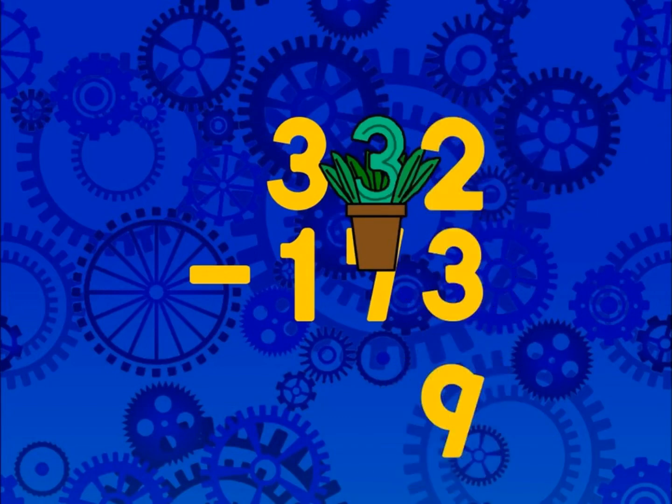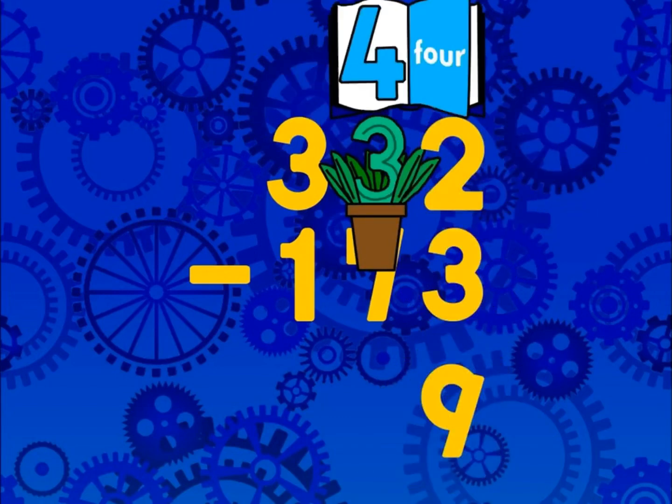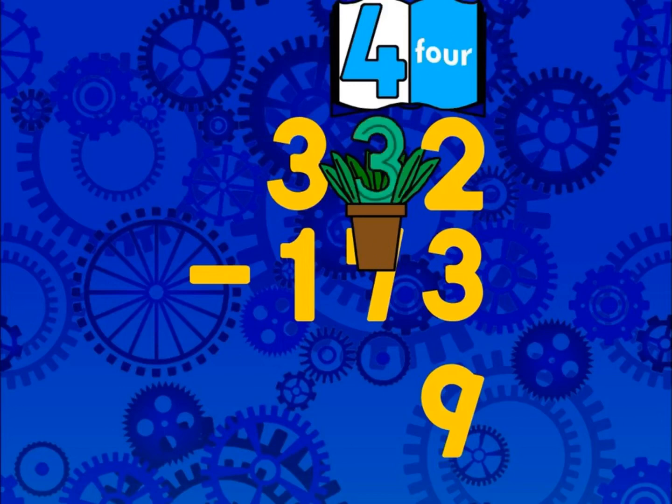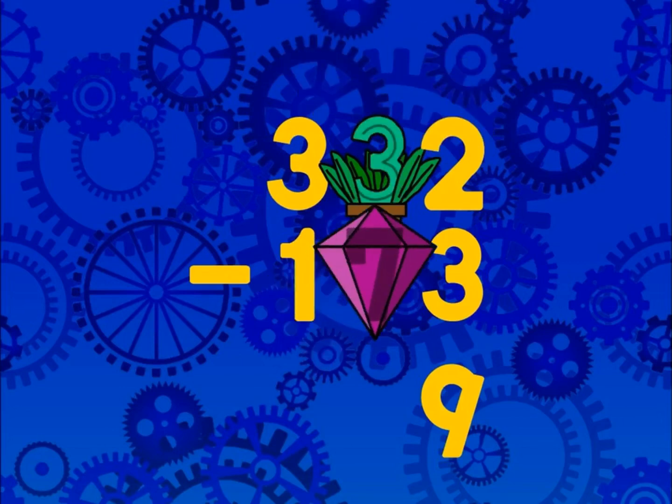Is that clear? Now, instead of 4 in the tens place, you've got 3 because you added 1, that is to say 10 to the 2, but you can't take 7 from 3.